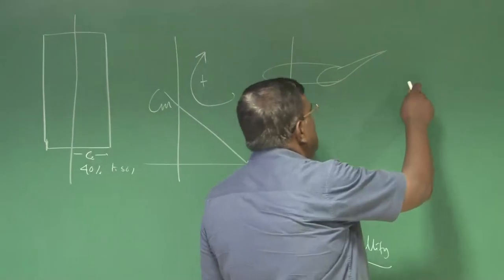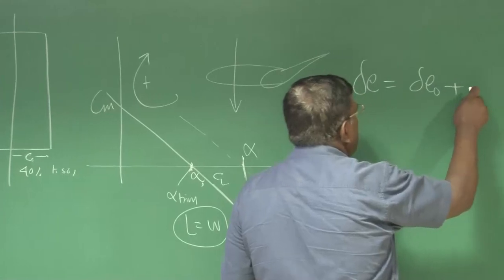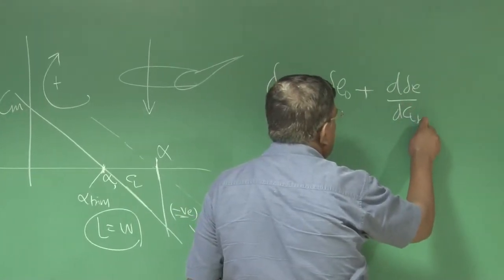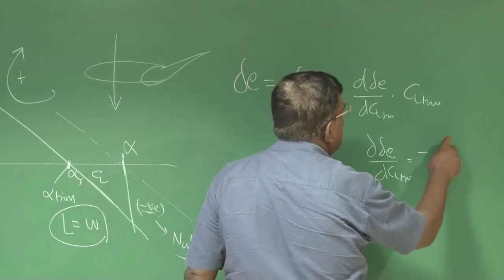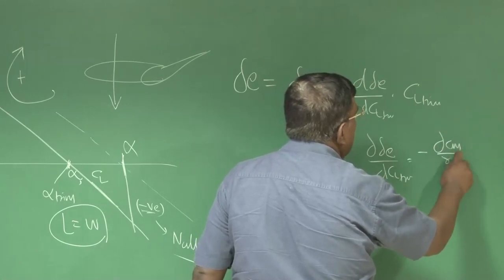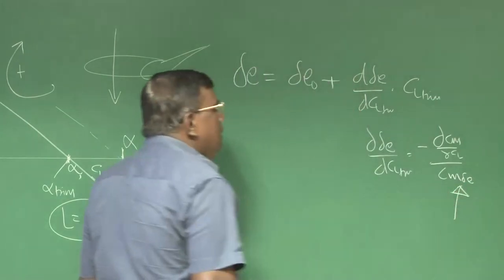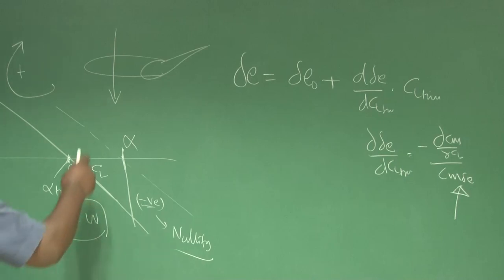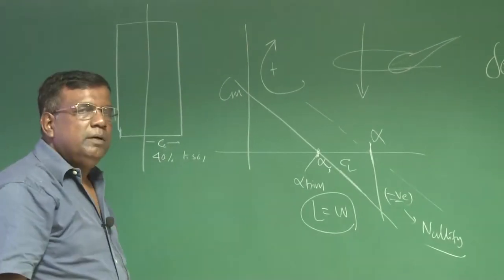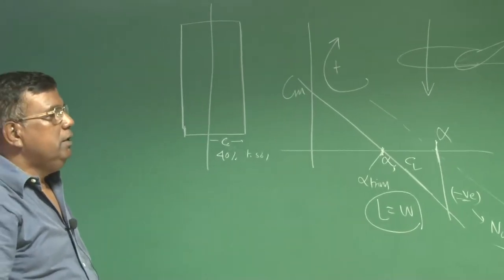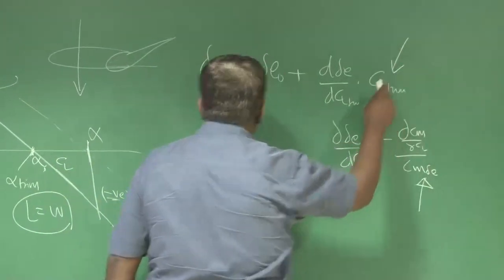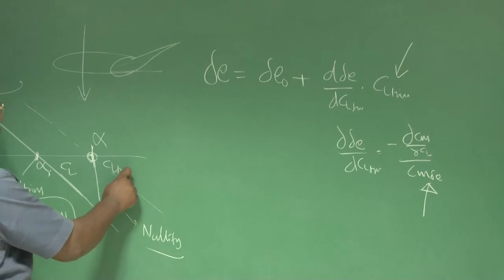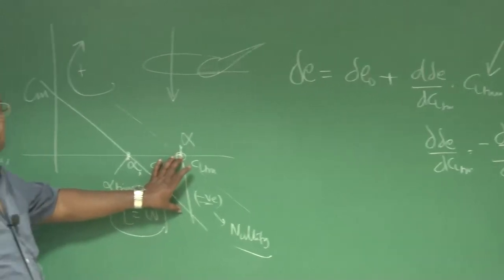We revise that delta E equals delta E naught plus d(delta E)/dCL_trim into CL_trim. Cm_delta_E is the elevator control power. That means, how much moment per unit deflection of elevator will it generate? That is what is related to Cm_delta_E, which is dCM/d(delta E).